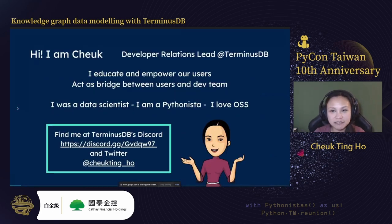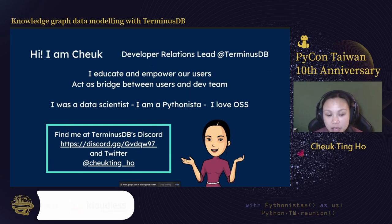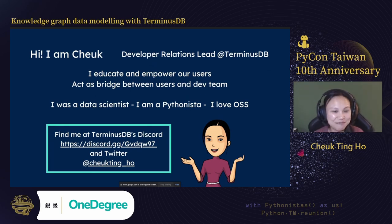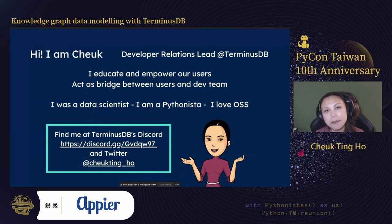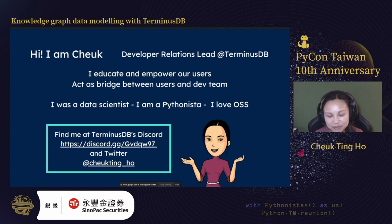I'm Cherry. I am a Developer Relations Lead at TerminusDB. My main goal is to educate and help developers understand TerminusDB and how to use it to make their projects go better and more powerful. I was a Data Scientist, so I understand the challenges of using Python to handle data.